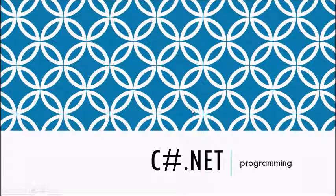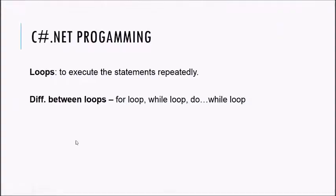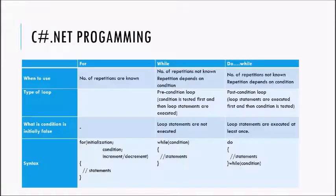Hello friends, welcome to the seventh video of C# .NET programming. In this video we're going to see the difference between the loops. In the previous videos we had discussed about different loops like for loop, while loop, and do-while loop. Loops are basically used to execute the statements repeatedly. Now let's see the difference between these loops, which will help you to make a better choice for which loop to be used.